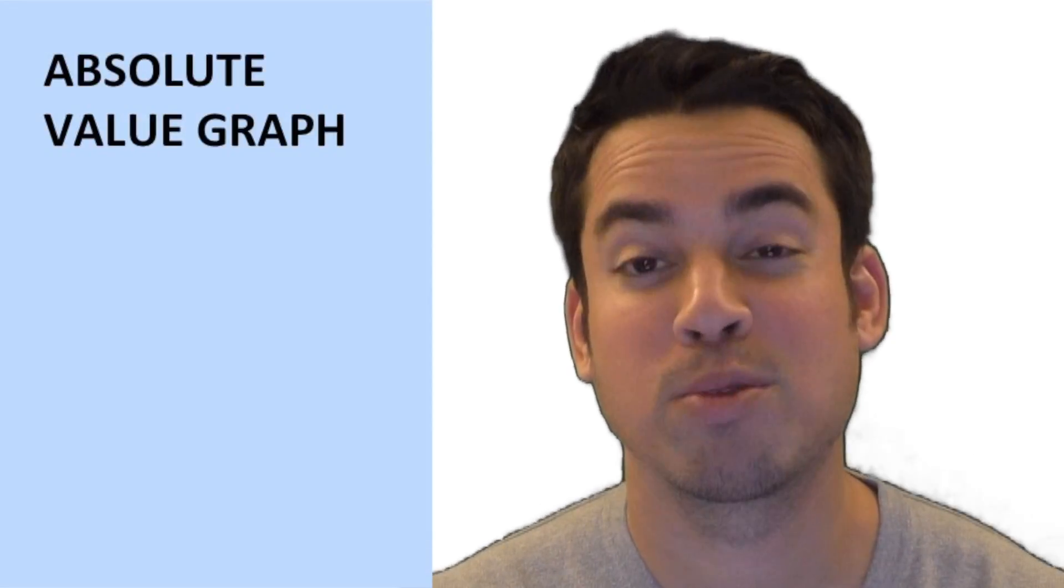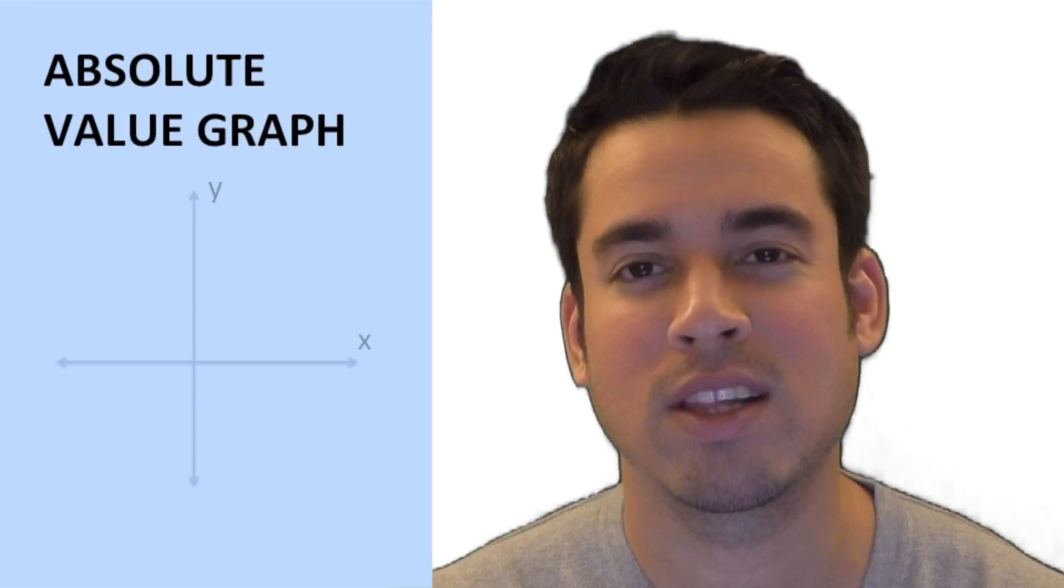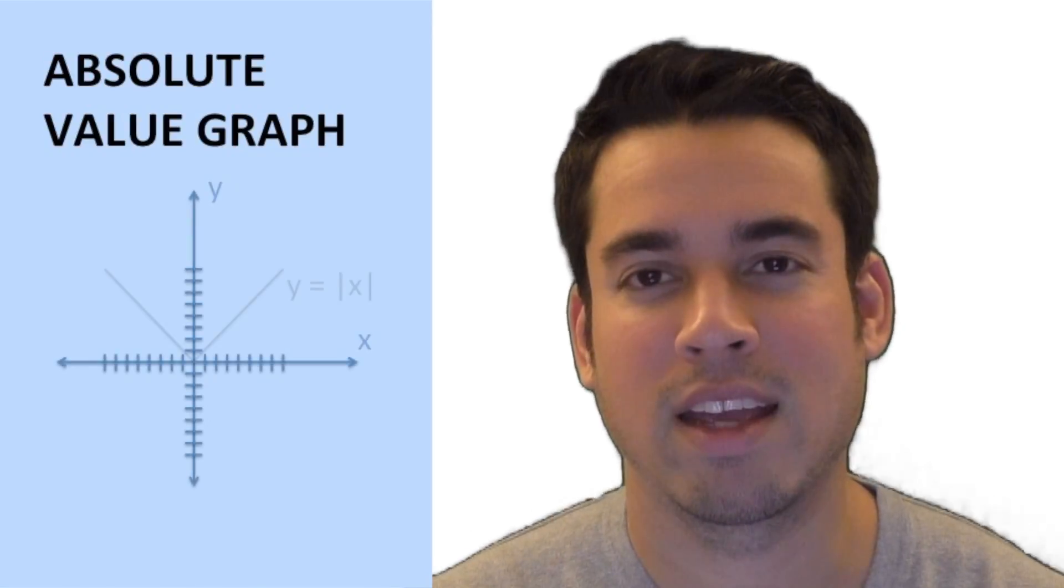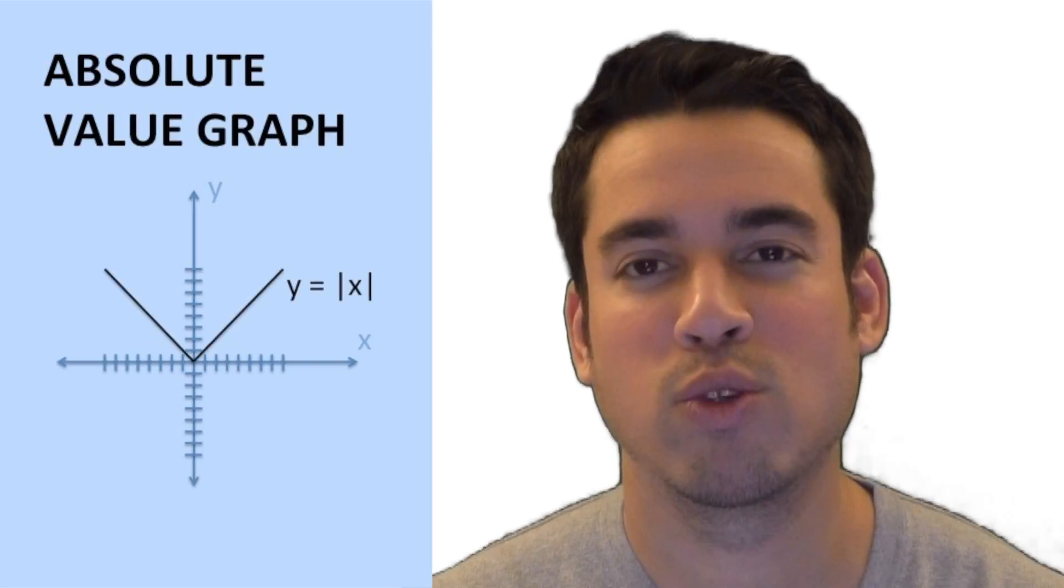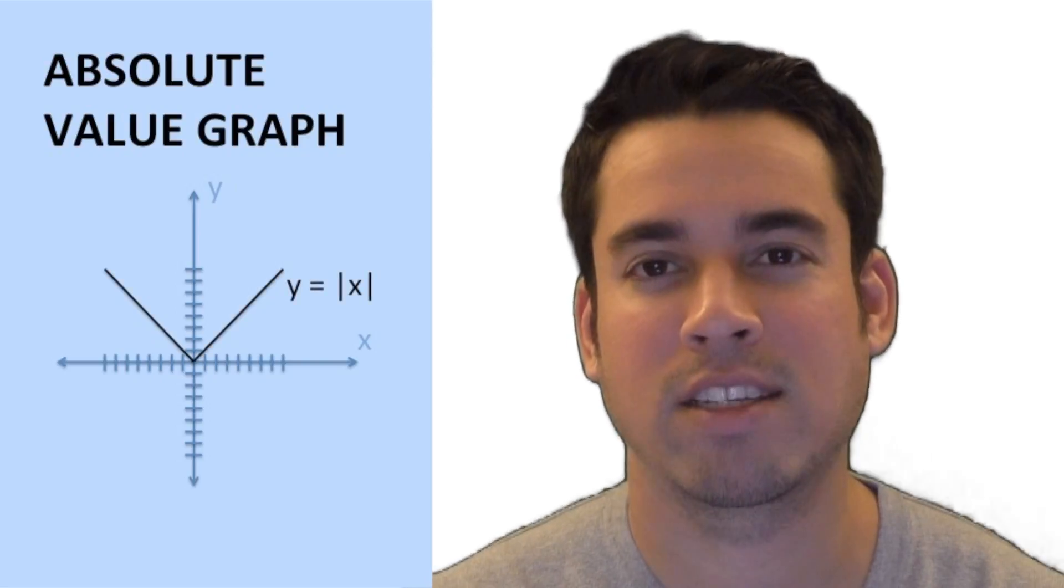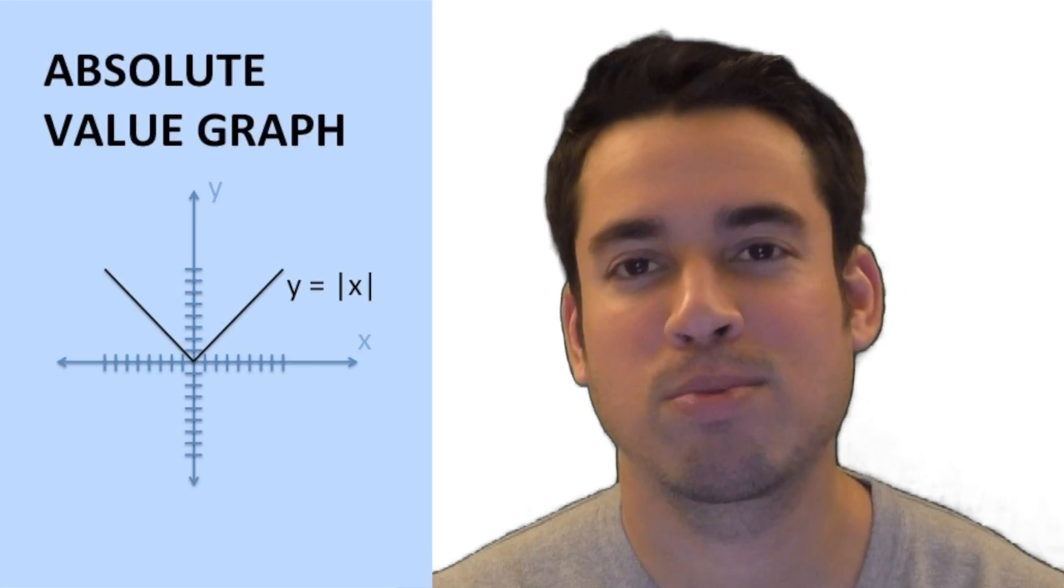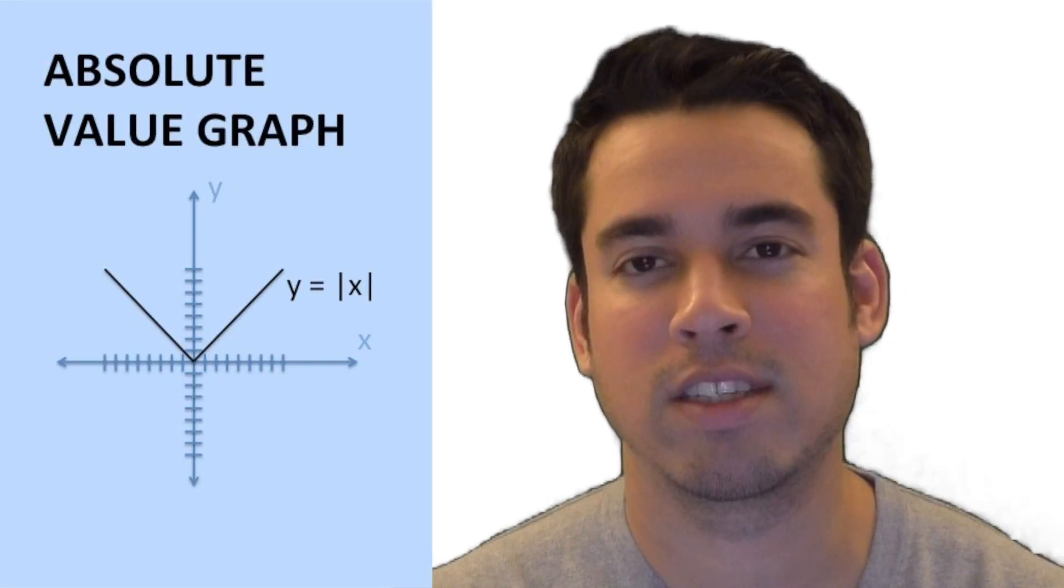It's important to know what the graph of an absolute value function should look like because sometimes this is tested. So here is a graph of y equals the absolute value of x. You notice it forms this neat little V shape. Let me explain exactly why that is if it doesn't seem intuitive.